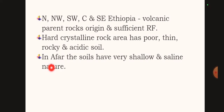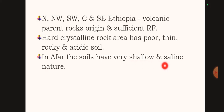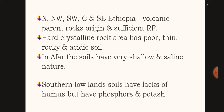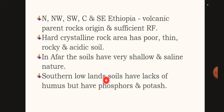Some Ethiopian soils have very shallow and saline natures. The underlying rocks are volcanic and sedimentary. Southern Lowlands soils lack humidity but have phosphorous and potash.